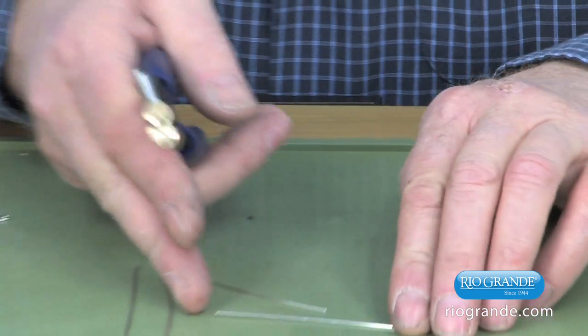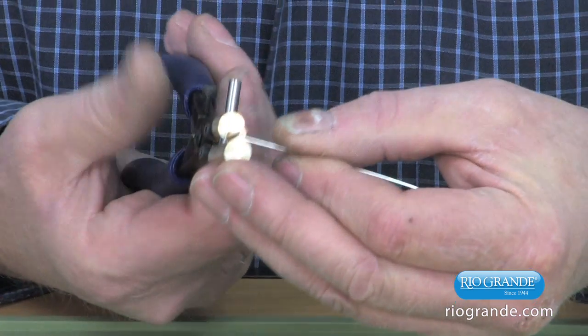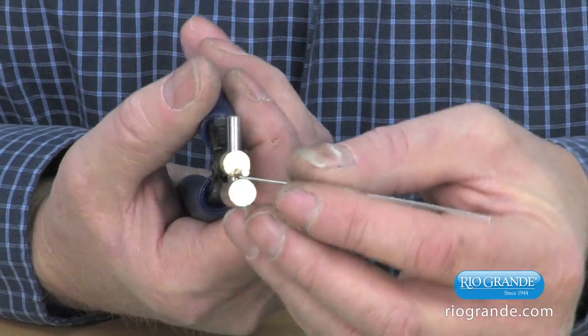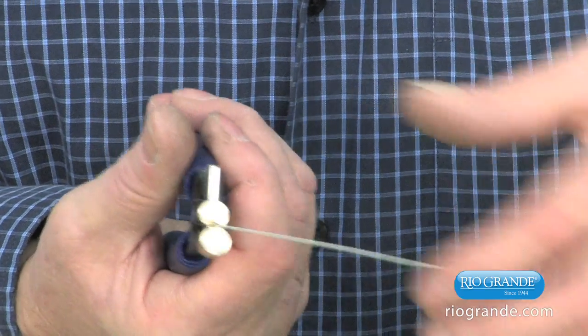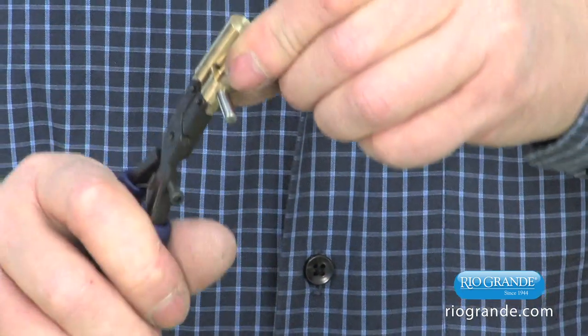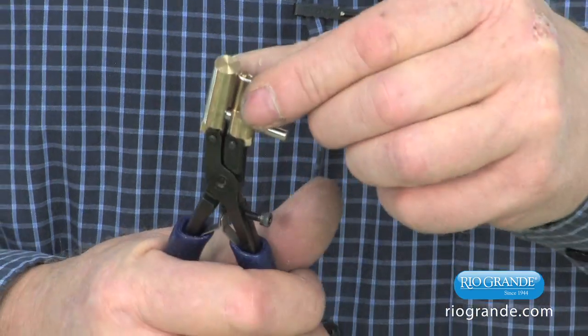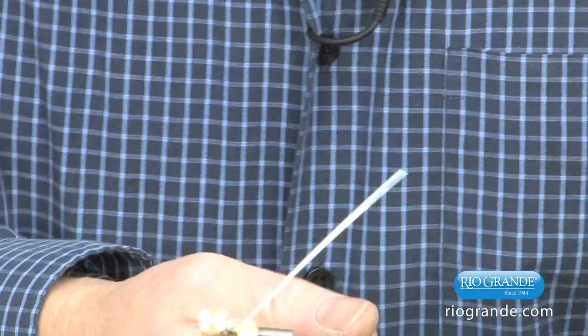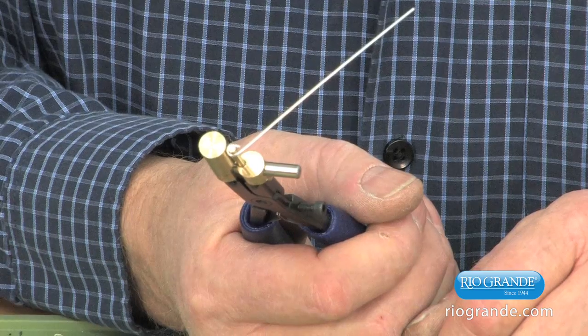To make the S-hook, I'll put the wire in and form a small eye on one end of the wire.